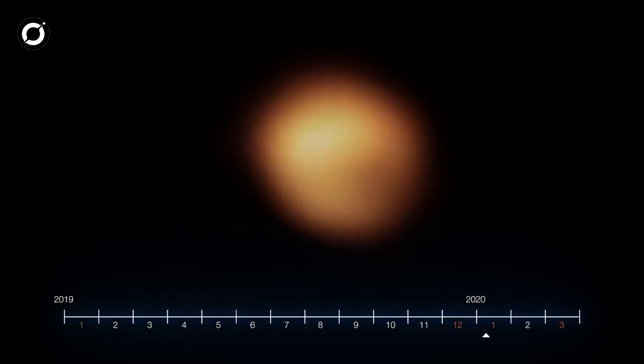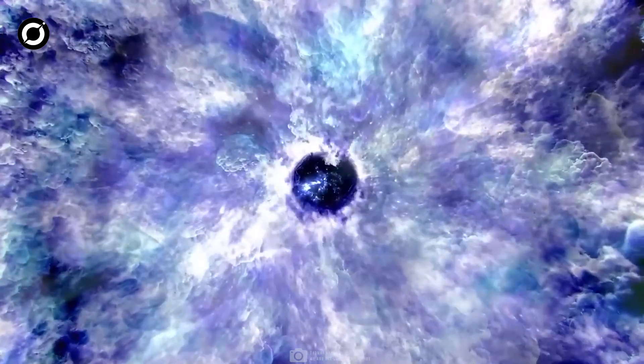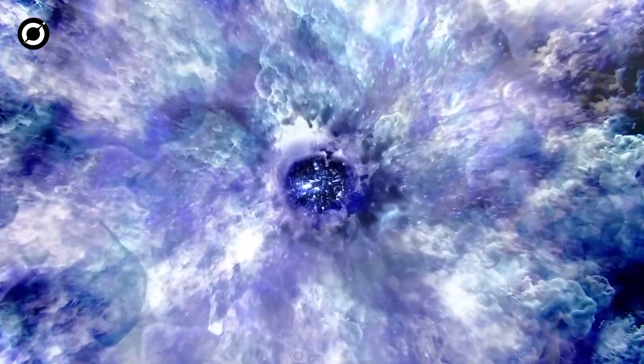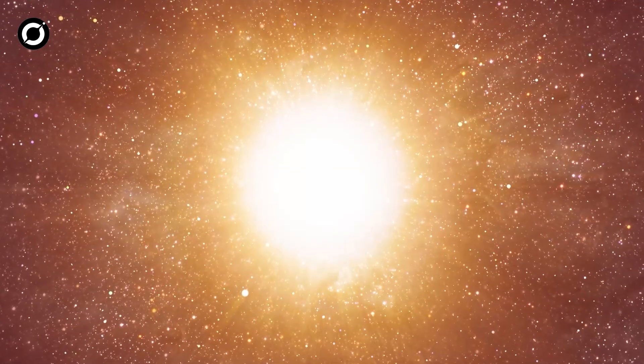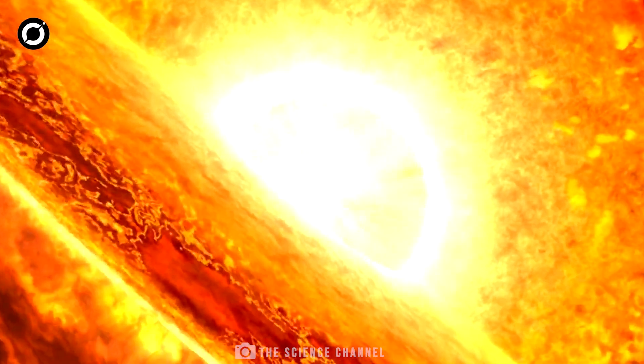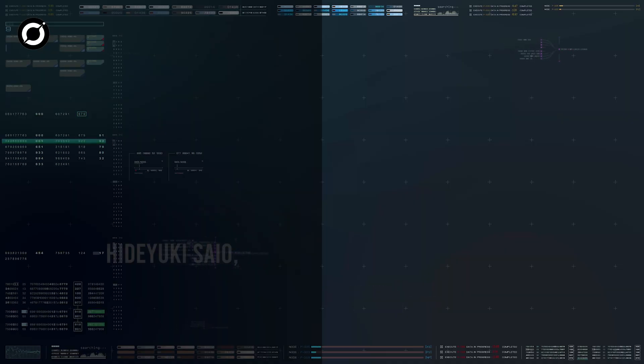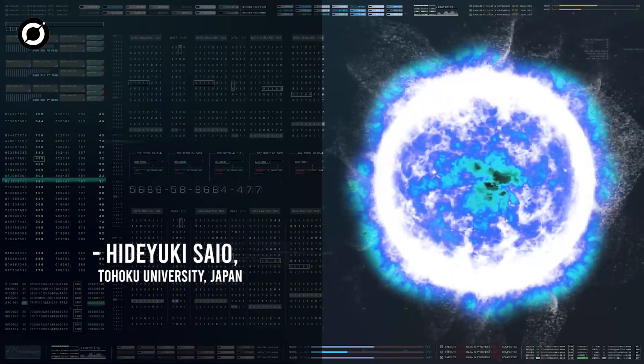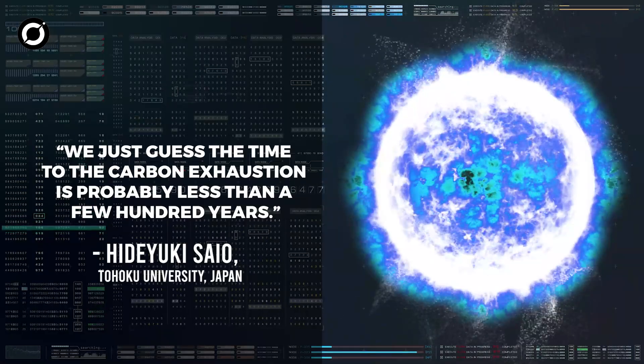They find that all four pulsations, from the 2,200 day cycle through the 185 day cycle, can be explained by a breathing star in the late stages of carbon burning. The only way for Betelgeuse to pulsate in this way is if it is at the very end of its carbon burning period. During the helium fusion stage that follows, carbon builds up in their cores. Then they begin a core carbon burning period that produces other elements. The new research says that Betelgeuse is in the late stages of that period. It's not possible to exactly estimate how much carbon is left in the core at present, Sayo says. We just guess the time to carbon exhaustion is probably less than a few hundred years.